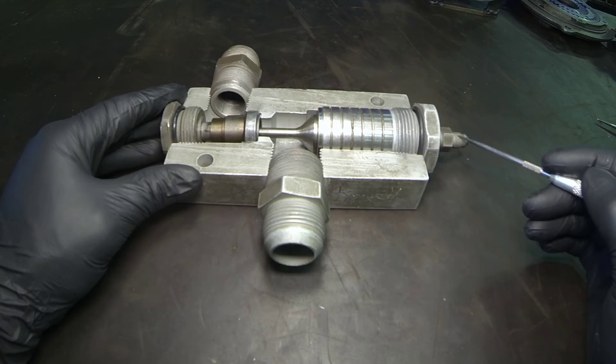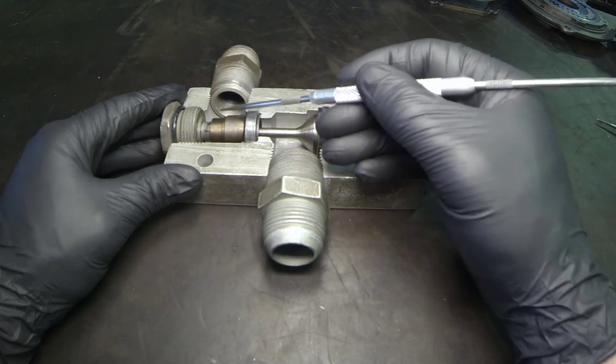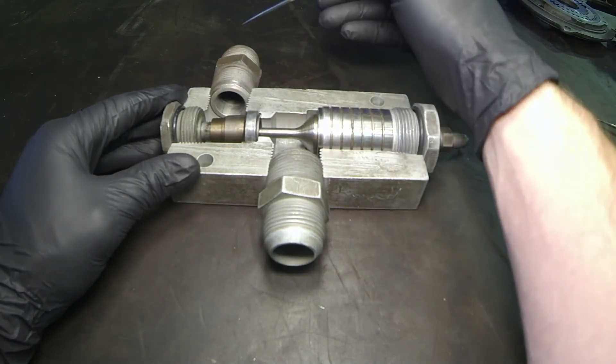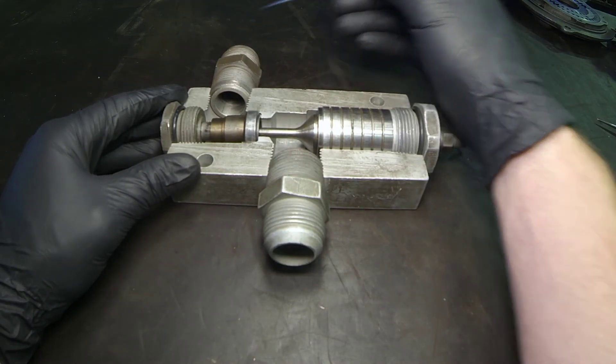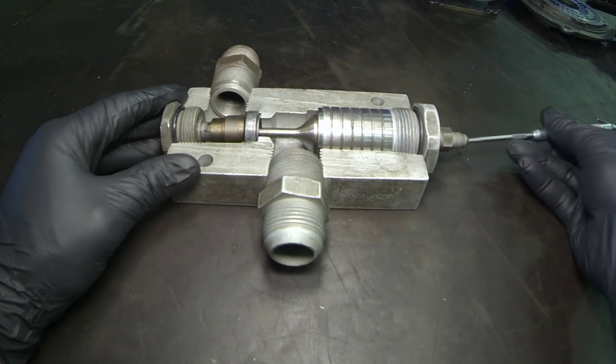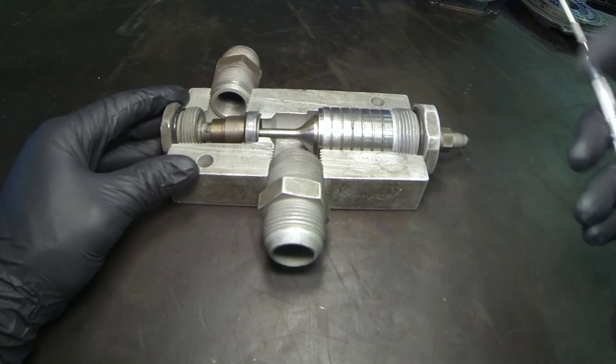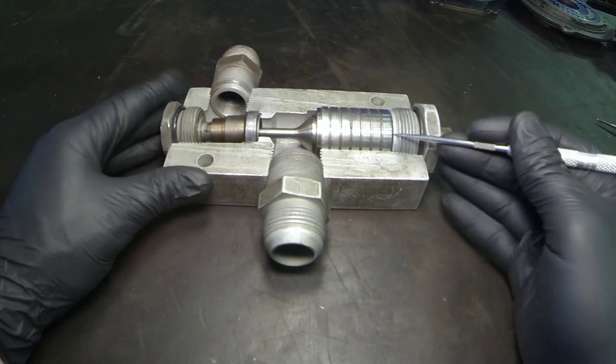As that oil goes to the rod side of the cylinder, it's trying to retract the cylinder. The oil out of the base end is getting stopped by this check valve and pressure rises on the rod side. That pressure rise on the rod side is sent in and is allowed to operate or push against this spool.